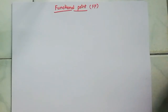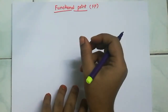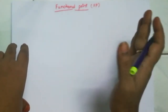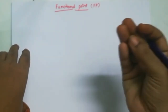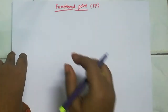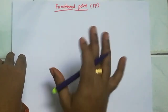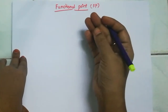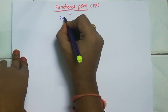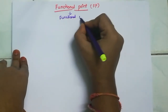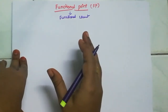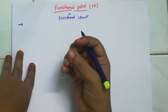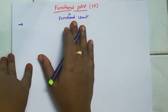Hi students, in software engineering we are going to study the topic 'Functional Point'. We already covered software metrics - in 4 types of metrics, the 1st type was LOC (Lines of Code). The next type is Functional Point, which is a very very important thing. So what is a functional point? It is also called 'Functional Count'.